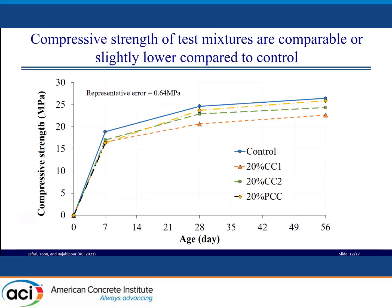This figure shows the compressive strength results. All three test mixtures showed lower strength at 7 days compared to the control, while at later ages the one with the highest amount of amorphous content showed almost comparable strength to the control, while the other two mixtures containing CC1 and CC2 had 10 to 15 percent lower strength.